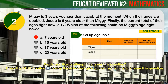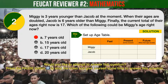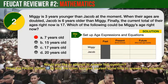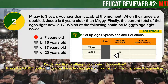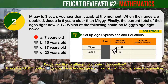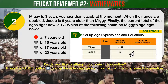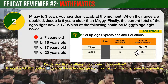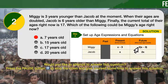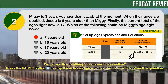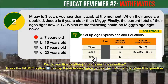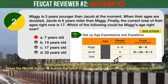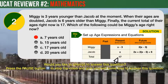Step 1: Set up your age table. This can be a simple sketch with pen and paper during your exam. Step 2: Set up your age expressions and equations. For this age problem, there is no reference to any point in the past, so we can ignore the past column. Let X be Jacob's age at the moment. Miggy is 3 years younger, so her age is X minus 3. When their ages double, Jacob's age will be 2X and Miggy's will be 2 times the quantity X minus 3.